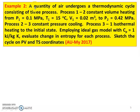Example number 2: A quantity of air undergoes a thermodynamic cycle consisting of three processes. Process 1 to 2: constant volume heating from P1 equals 0.1 MPa, T1 equals 15 degree Celsius, V1 equals 0.02 m³, to P2 equals 0.42 MPa. Process 2 to 3: constant pressure cooling. Process 3 to 1: isothermal heating to the initial state. Employing the ideal gas model with Cp equal to 1 kJ per kg Kelvin. Evaluate the change in entropy of each process and sketch the cycle in PV and TS coordinates. May 2017 question.